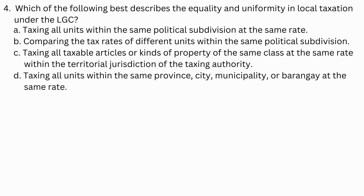Number 4. Which of the following best describes the equality and uniformity in local taxation under the Local Government Code? a. Taxing all units within the same political subdivision at the same rate. b. Comparing the tax rates of different units within the same political subdivision. c. Taxing all taxable articles or kinds of property of the same class at the same rate within the territorial jurisdiction of the taxing authority. d. Taxing all units within the same province, city, municipality, or Barangay at the same rate.